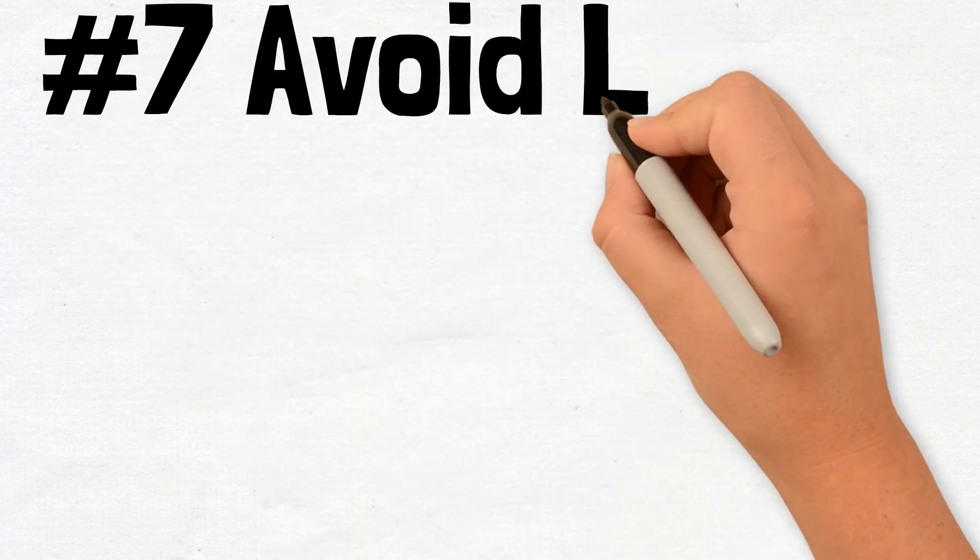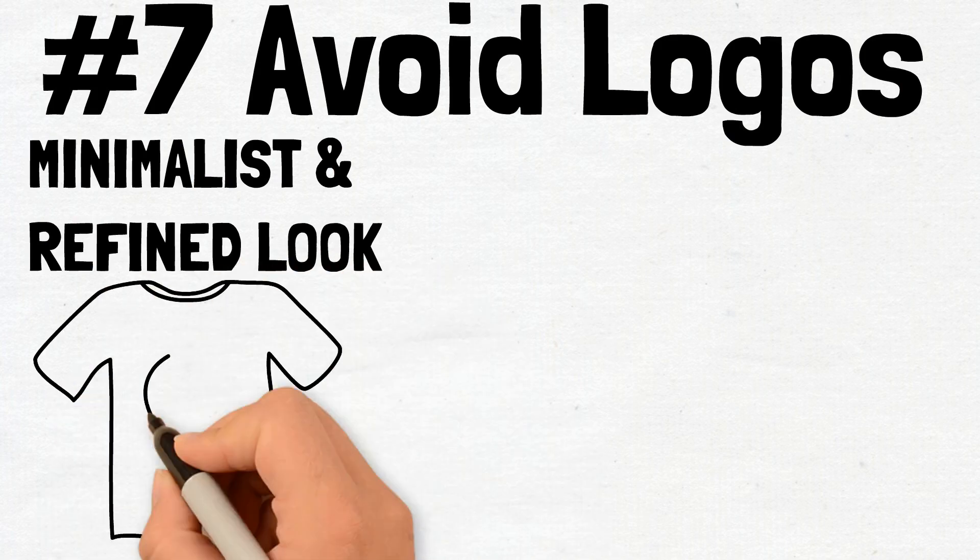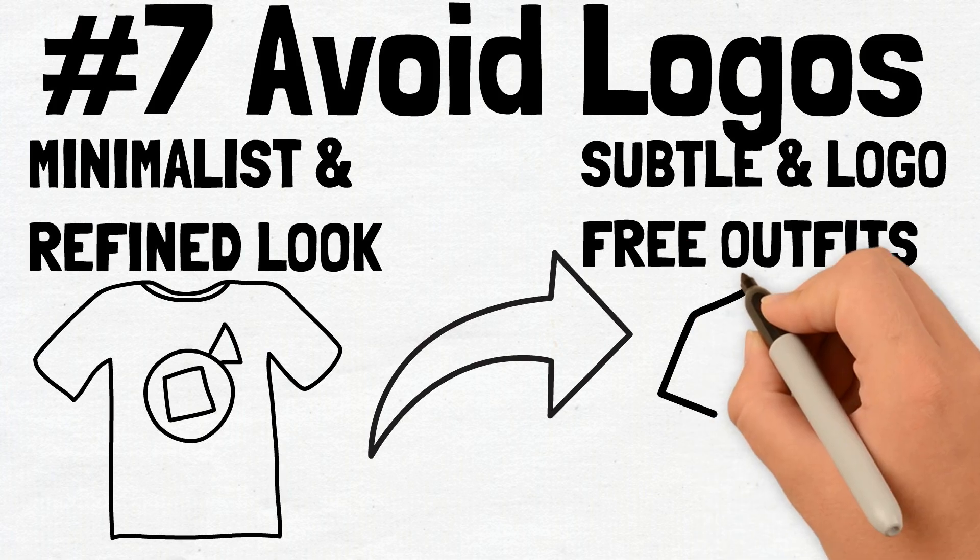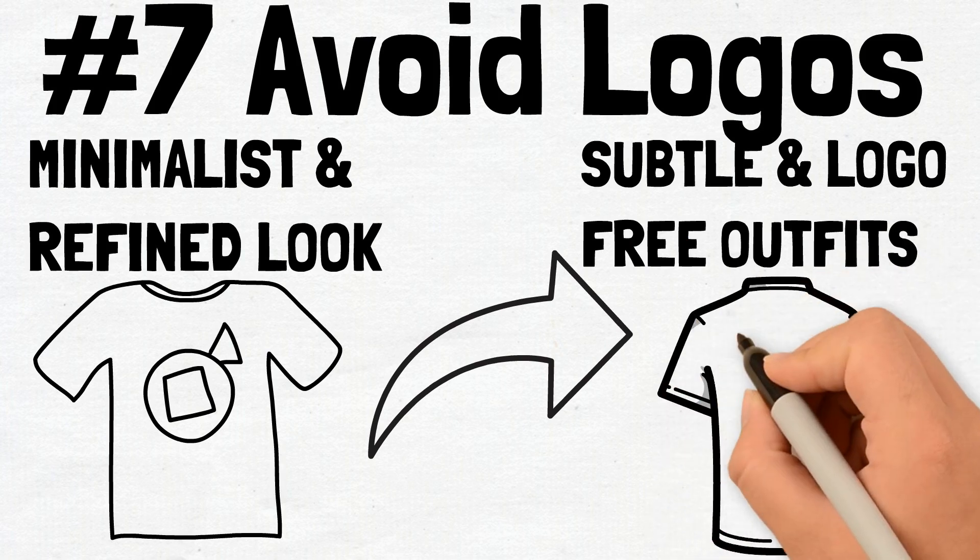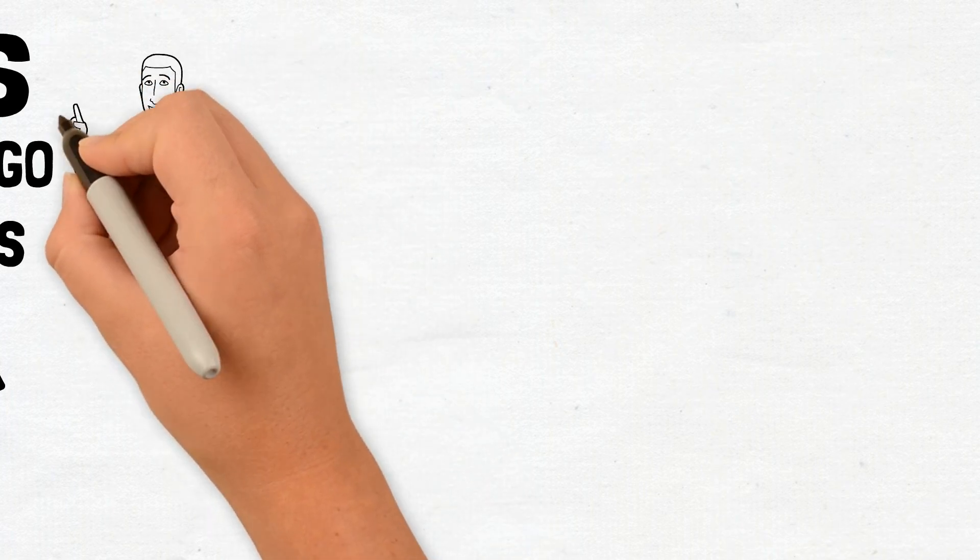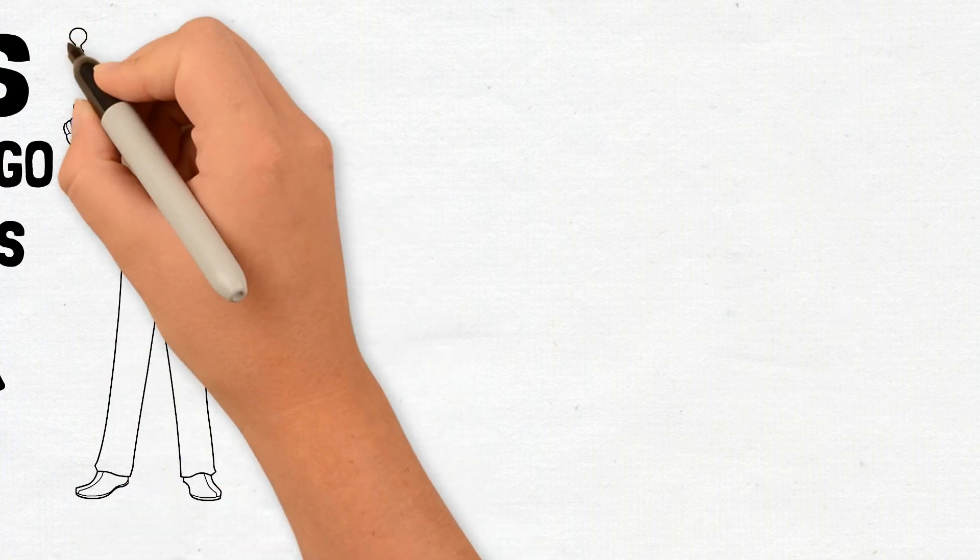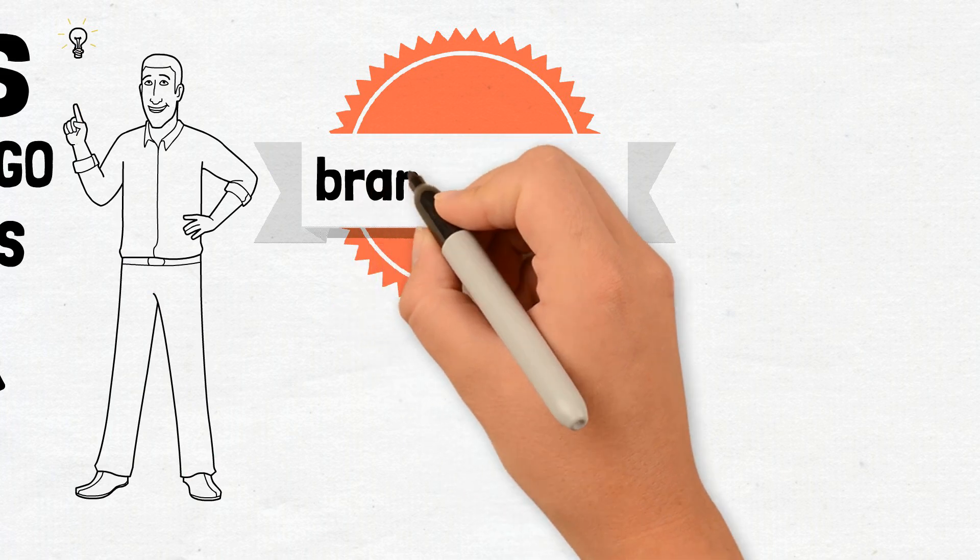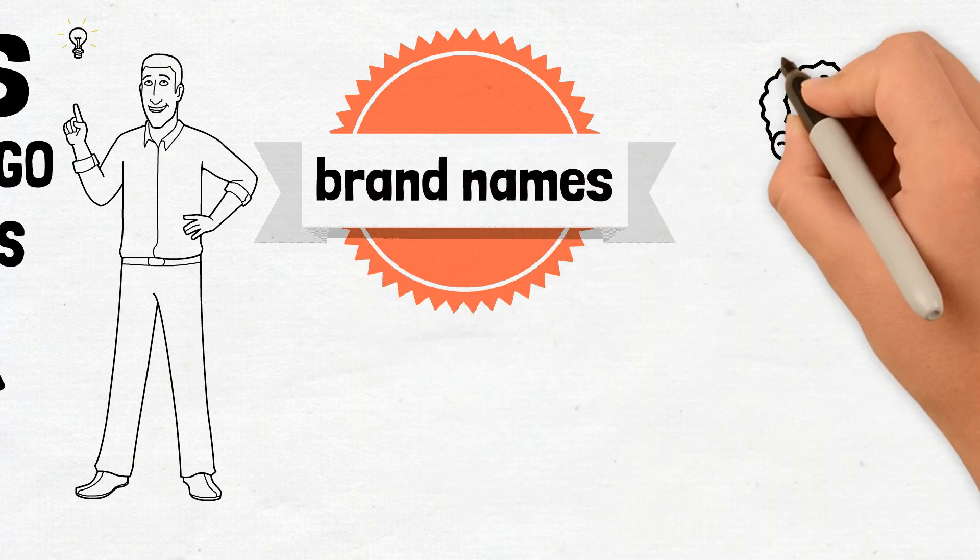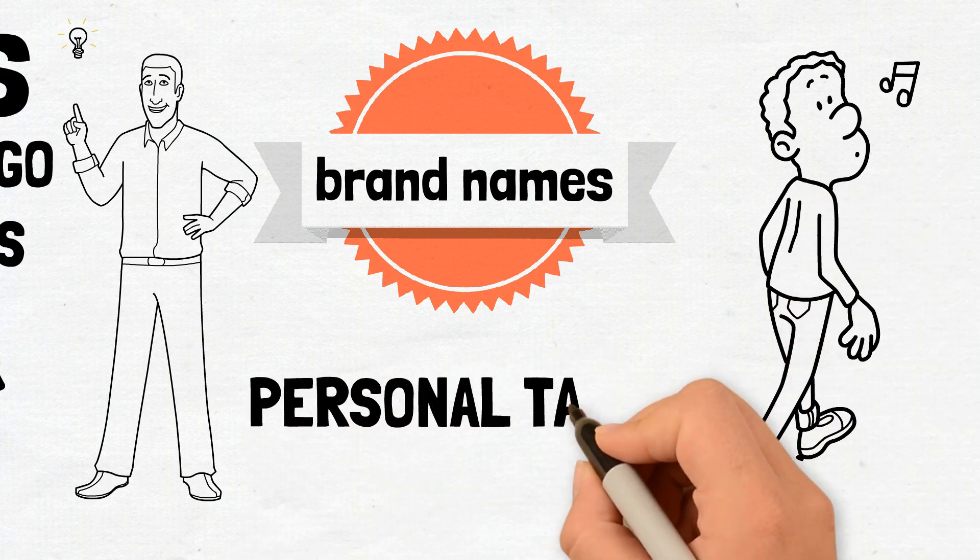7. Avoid Logos. To achieve a more minimalist and refined look, steer clear of clothing with logos. Subtle and logo-free outfits give you a clean, sophisticated appearance. It's a subtle way to convey that you don't need to rely on branding to stand out. Your style speaks for itself. When you wear clothing without distracting logos or large brand names, it sends a message that your fashion choices are driven by your personal taste and not by trends or labels.